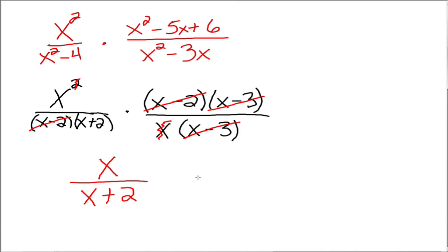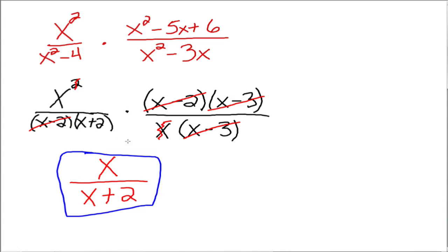We cannot divide these x's out because of the plus 2. x plus 2 is all one factor, and either all of it divides out or none of it divides out. So this is just as far as we get to go.